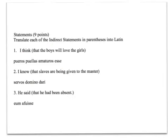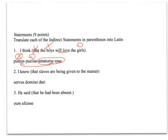'I think the boys will love the girls.' It's an indirect statement — you don't translate 'that' into Latin. The subject, boys, is accusative because it's the subject of an indirect statement. 'Will love' is the future active infinitive. Notice the ending agrees with the subject. Girls is the object of what they love, and that would also be accusative, because all grammar rules hold true except for subject accusative and verb infinitive.